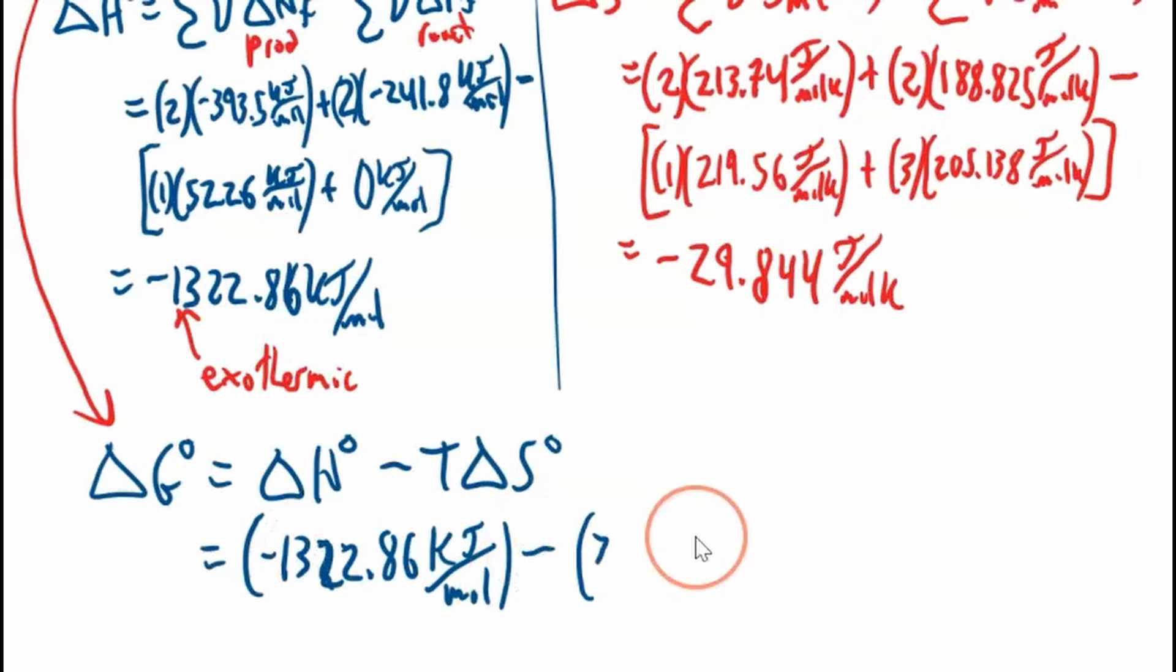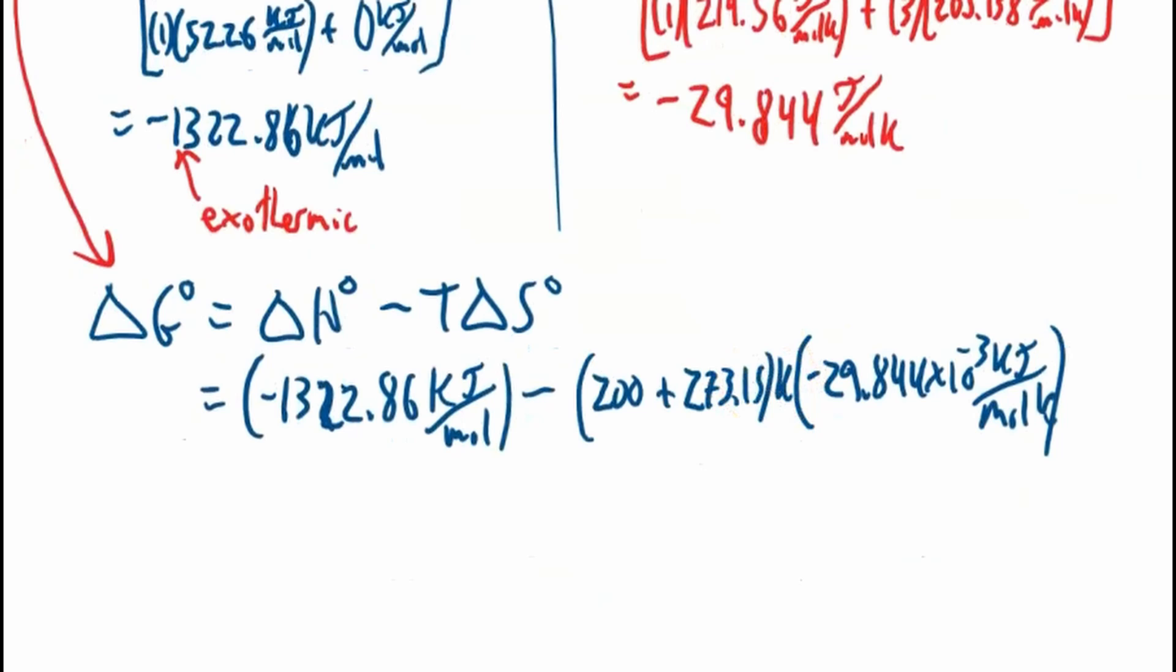I'll keep this one in kilojoules. Negative 1322.86. It's not 298 Kelvin, it's 200 degrees Celsius, but temperature has to be in Kelvin, so we'll add 273.15 to make it in Kelvin. And our change in entropy, this is in joules, we want it in kilojoules, so I'm going to turn this into kilojoules by dividing it by 1000. Negative 29.844 times 10 to the negative 3 kilojoules per mole Kelvin.